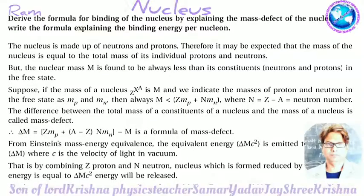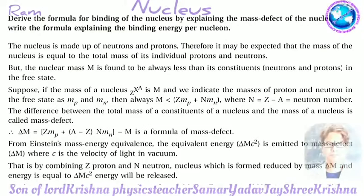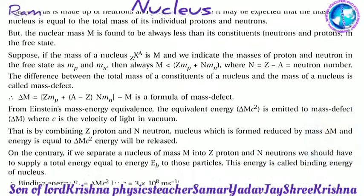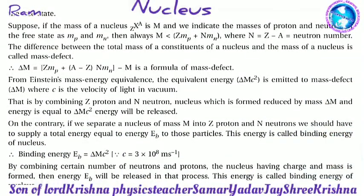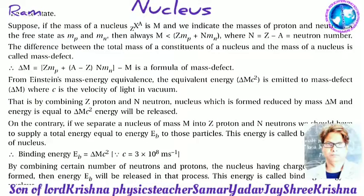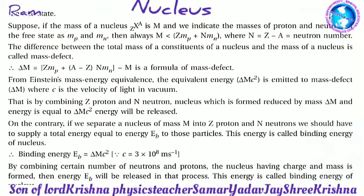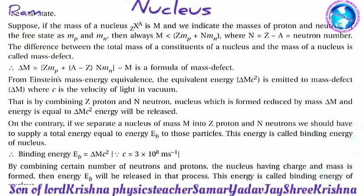From Einstein's mass-energy equivalence, the equivalent energy ΔMc² corresponds to the mass defect ΔM, where c is the velocity of light in vacuum. That is, by combining Z protons and N neutrons, the mass is reduced by ΔM and energy equal to ΔMc² is released.